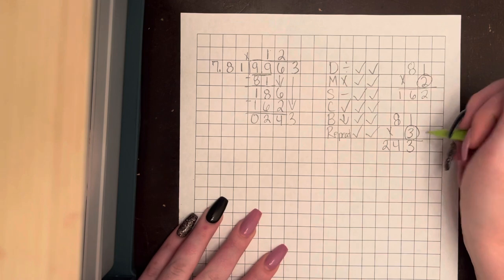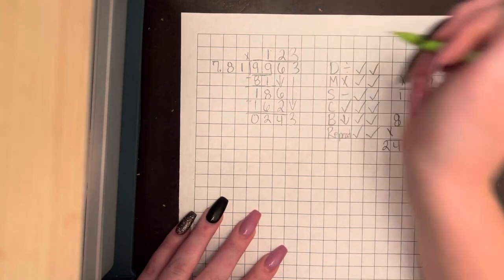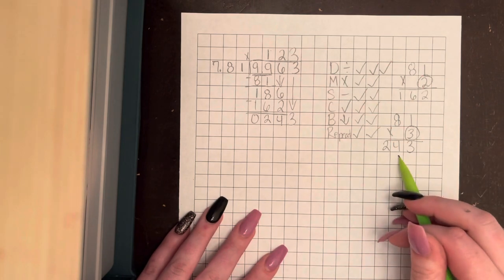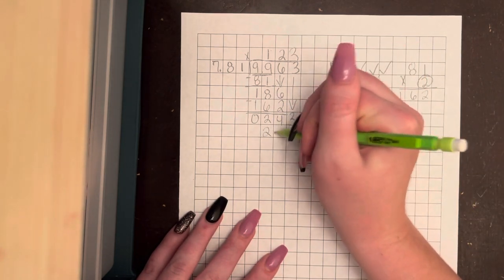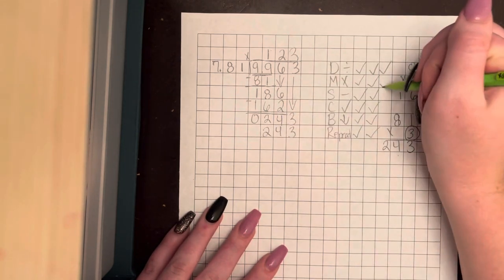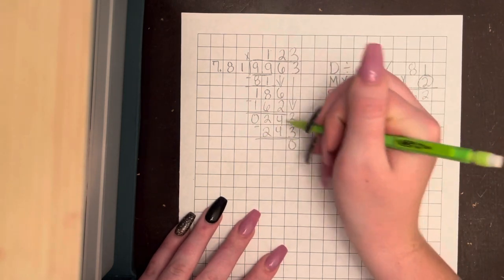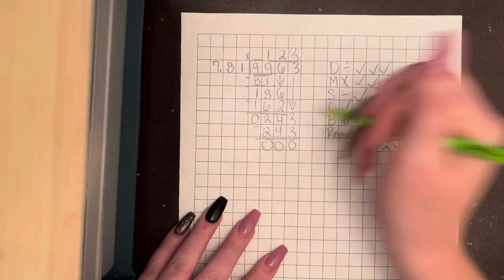So we're going to put this number on top. We divide it. Now we multiply. 3 times 81. We already have it here. 243. Now we subtract. 3 minus 3 is 0. 4 minus 4 is 0. 2 minus 2 is 0.